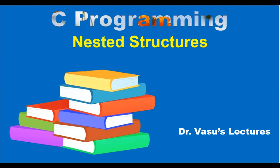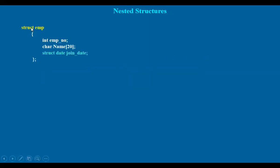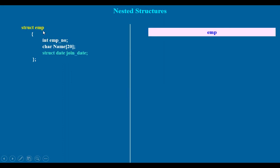We will talk about the nested structure. We will define a structure with employee number, name, and a date field. The date is of type structure. The main structure is named EMP.